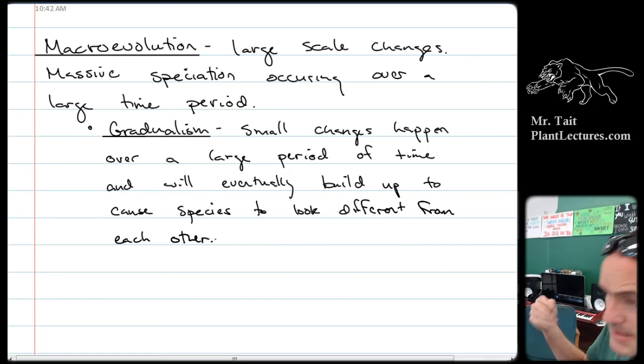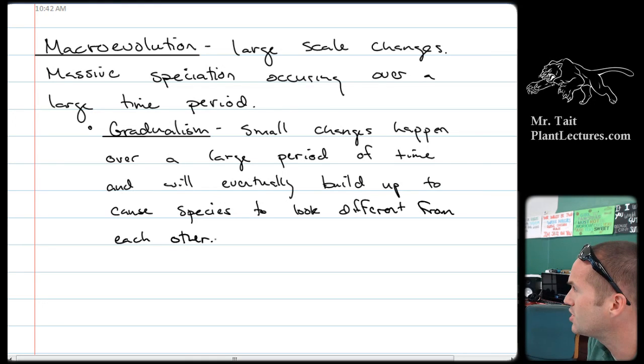Now, this makes sense. It seems like the logical thing when we learn about mutations and how mutations happen. But the interesting thing here is this is not supported by the fossil record. When you go back and you look at the fossils, you don't see gradualism.